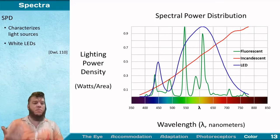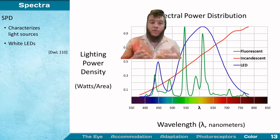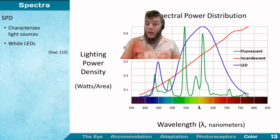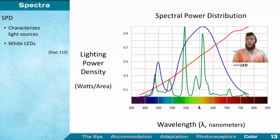Moving on to spectral power distribution. Just as we characterize our sensitivity with a curve across visible wavelengths, we characterize light sources the same way. Here are three common light sources. In red, an incandescent — essentially a black body radiator with a very smooth, complete curve. Most of the light production of that source happens well outside the range of human vision, because the curve keeps rising as you leave the visible range.